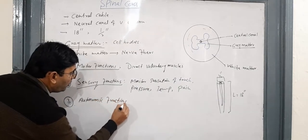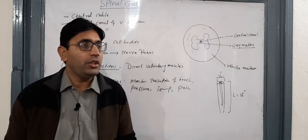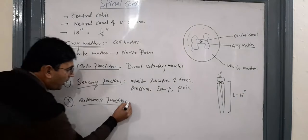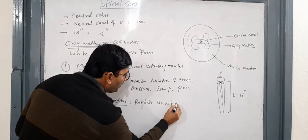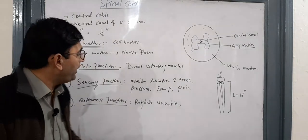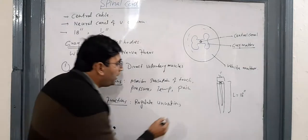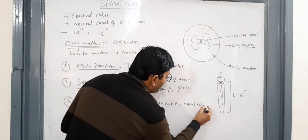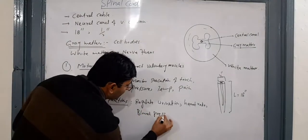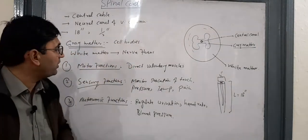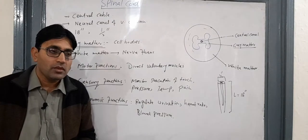The third function is autonomic functions. In autonomic functions, it regulates urination. It also regulates body temperature, heart rate, and blood pressure. These are the autonomic functions of the spinal cord.